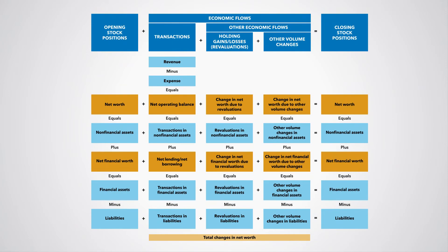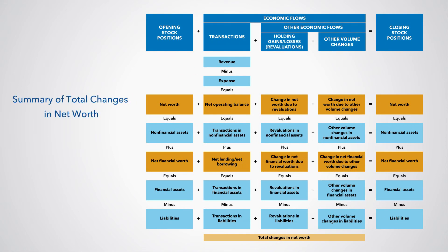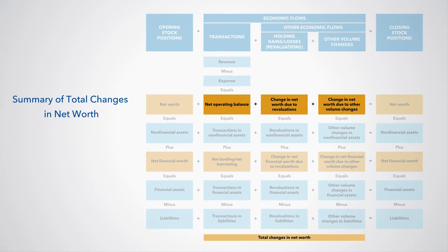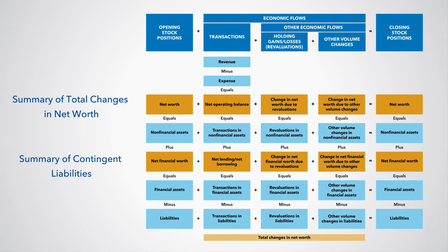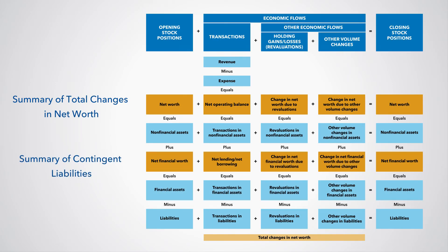There are also two additional statements that provide supplementary information for fiscal policy making and analyses: a summary of the total changes in net worth, and a summary of explicit and implicit contingent liabilities.